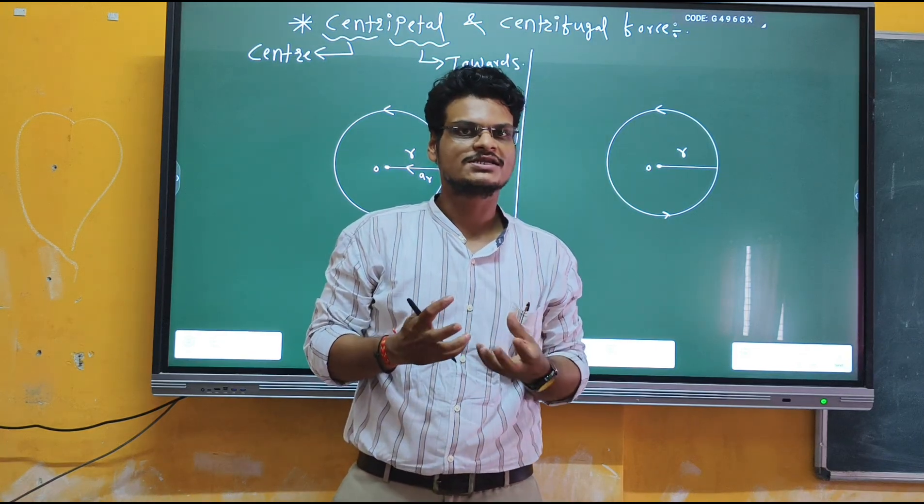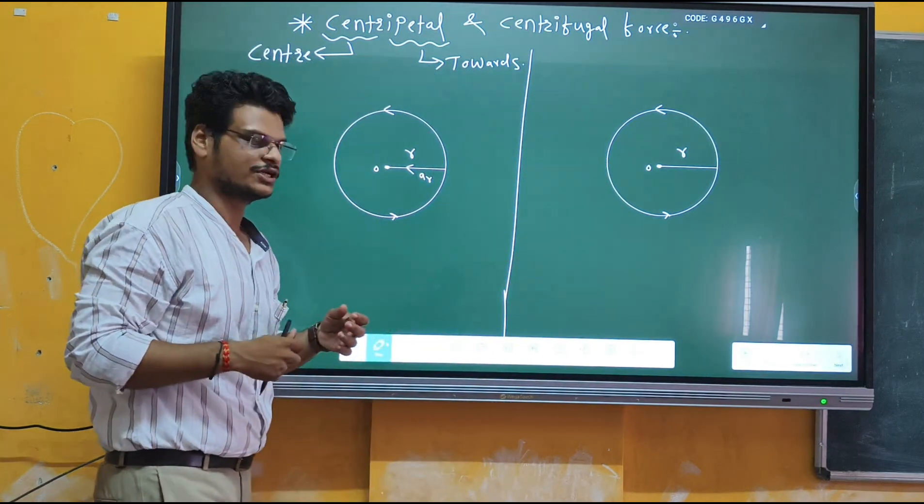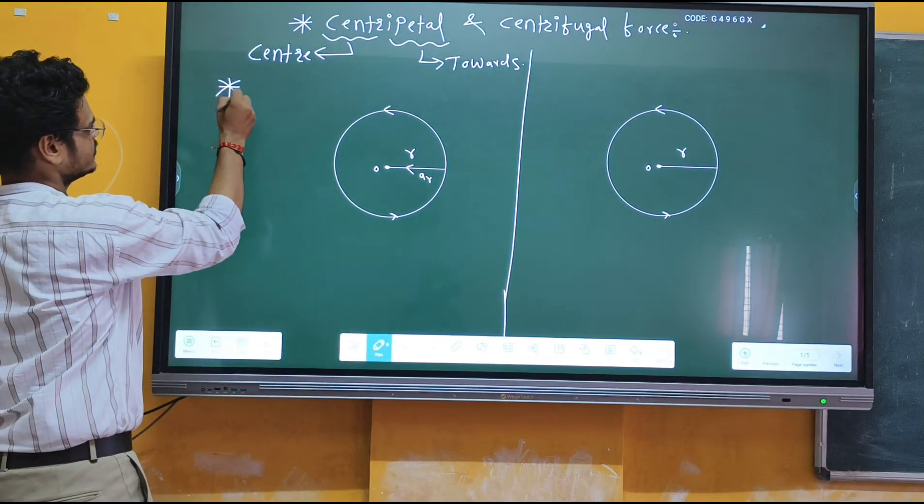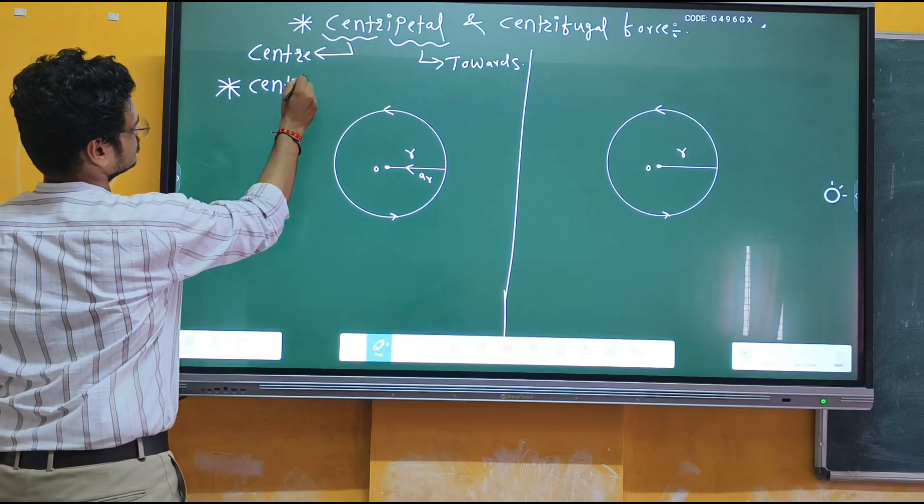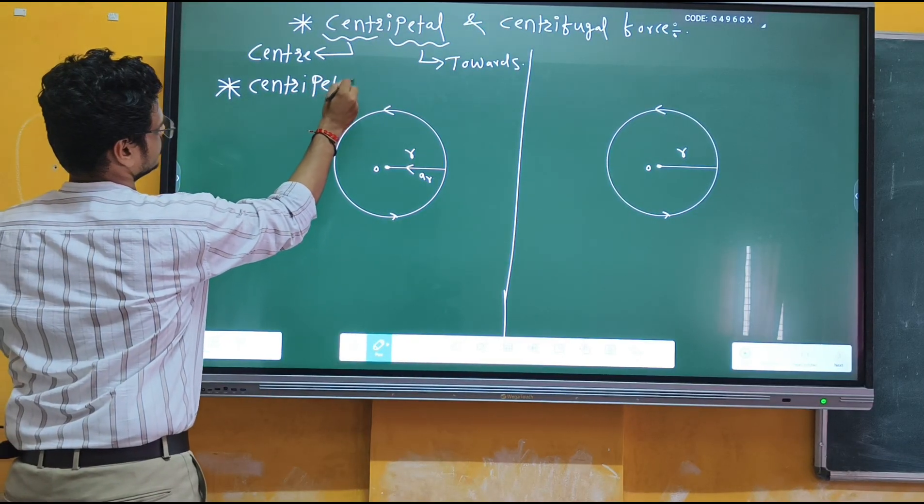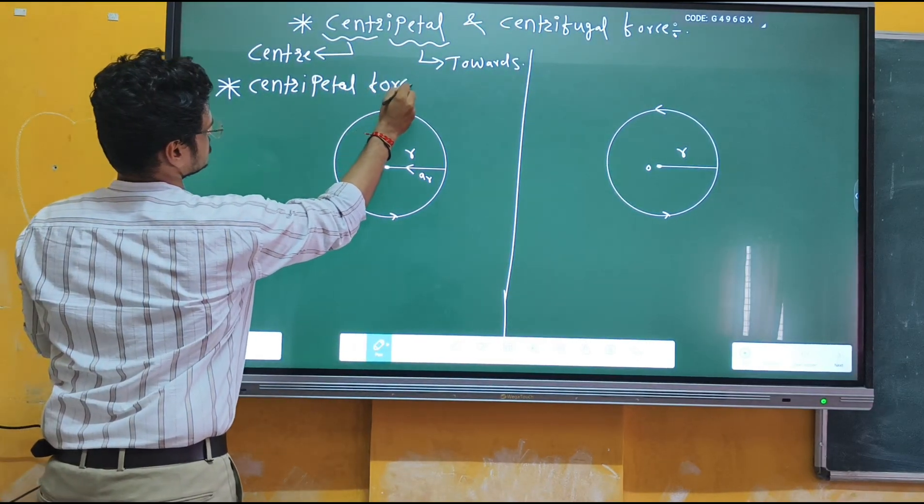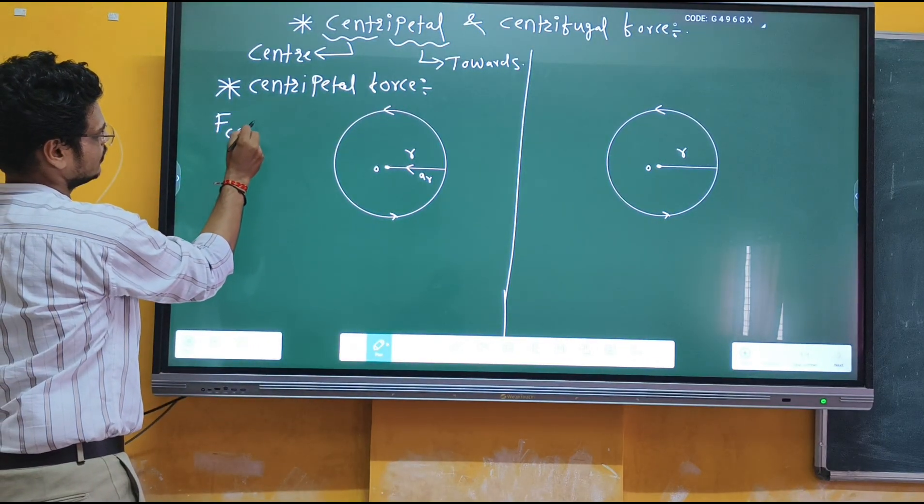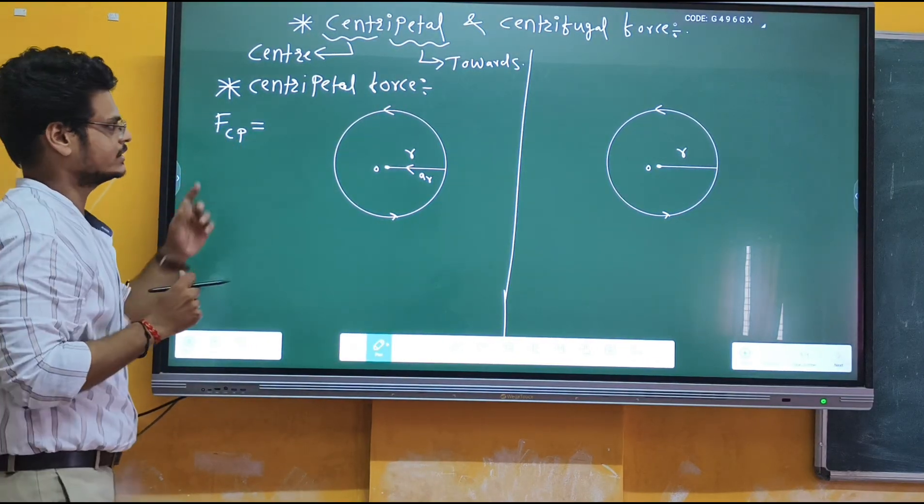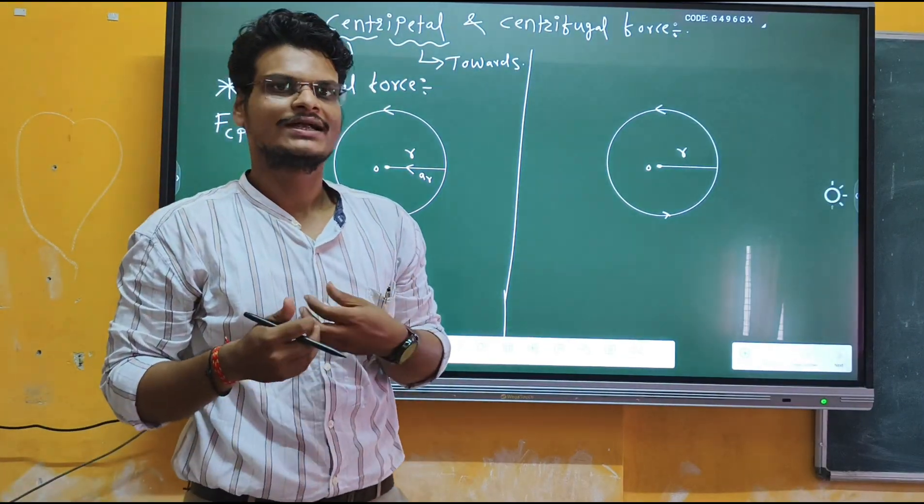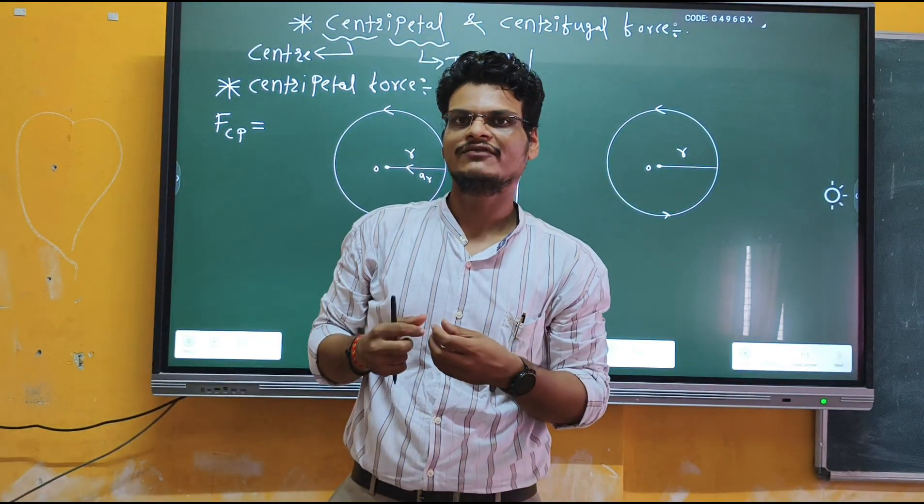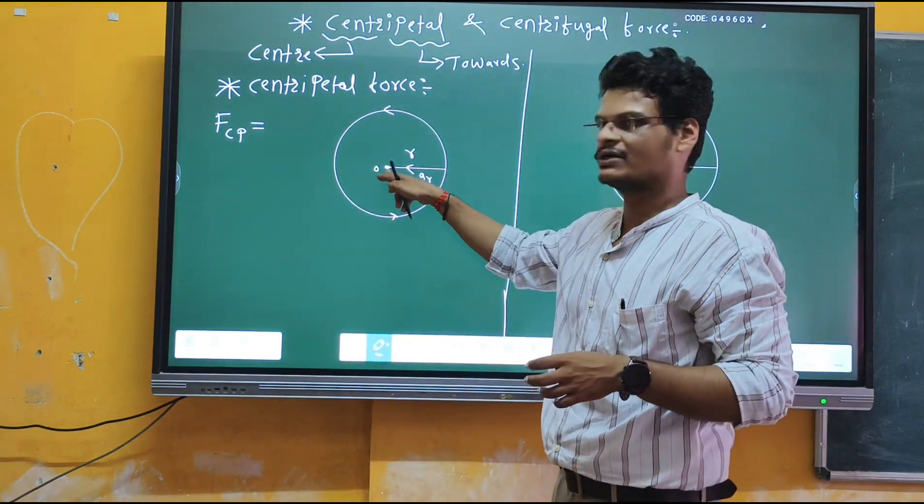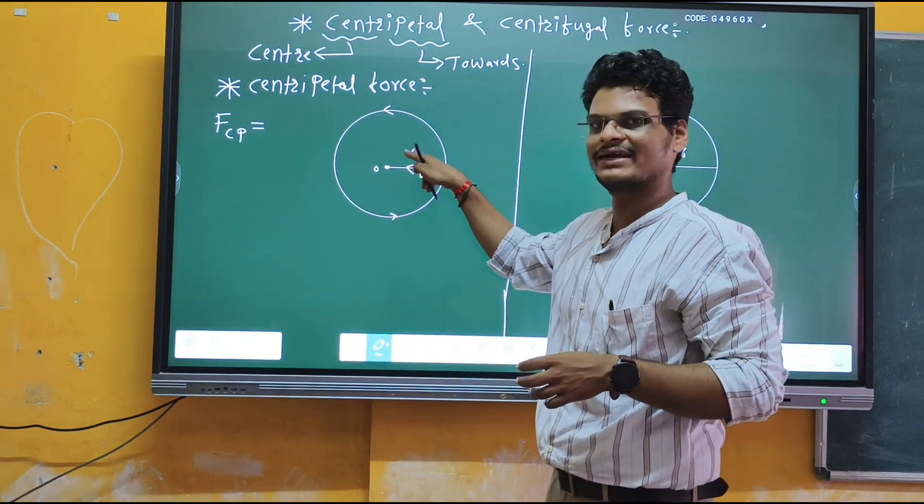Now let's understand with the help of diagrams. Centripetal force can be denoted by F_cp. This is a physical quantity that can be determined and identified. Here we have a circle with its center and radius R.